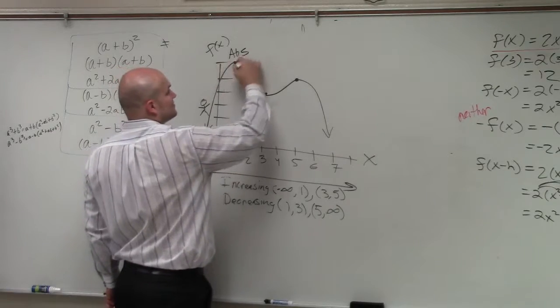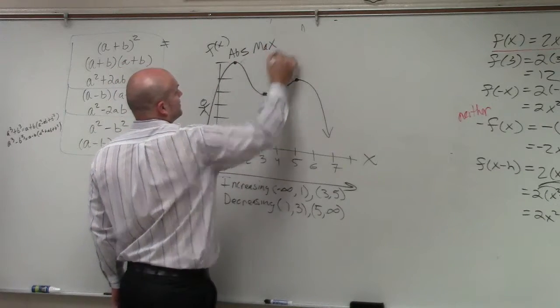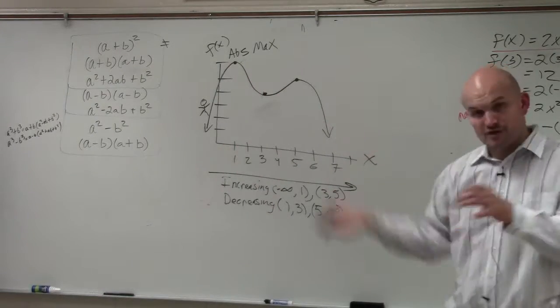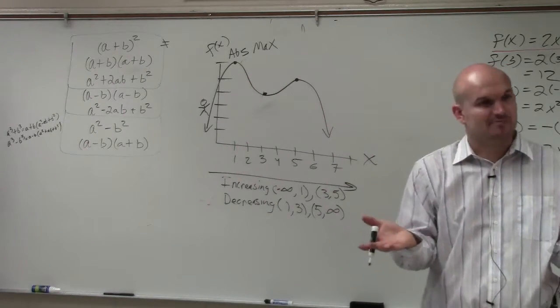All right, obviously if it's a max, absolute max, or if it's a maximum point, then we call it an absolute max. If this graph was inverted and that was a minimum point, we'd call it an absolute minimum, OK?